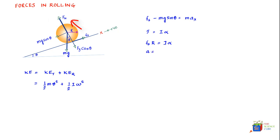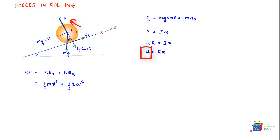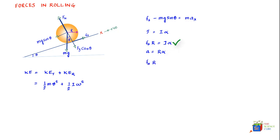We also know that the tangential acceleration a equals r·α. Note that ax is the linear acceleration of the body while a is the tangential acceleration due to rotation — the two are different. However, since the body is not slipping, the magnitude of ax and a are the same at all times. Substituting α from this relation into the torque equation gives fs·r = I·a/r, so fs = Ia/r².